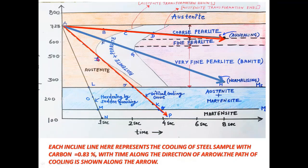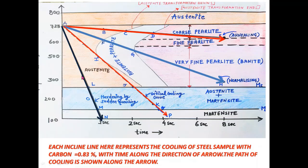Since we do not enter into the nose of the TTT diagram while going through arrow AP, pearlite is not formed. This cooling rate along line AP is called the critical cooling rate, because by adopting this cooling rate we do not enter into the C curve and pearlite will not form — only martensite forms. Similarly, we can find out the various phases obtained while cooling the sample from point A to point N along arrow AN.